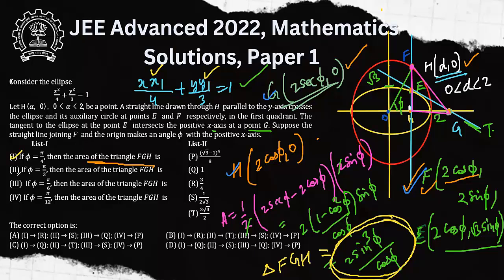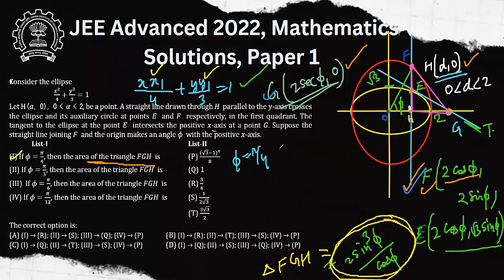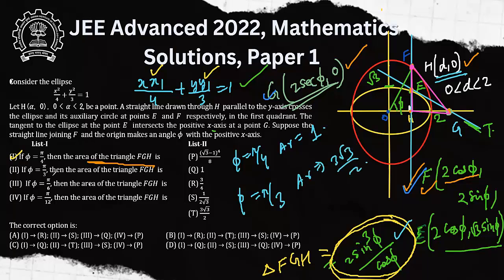For the different options, we plug in each value of φ. For φ = π/4, the area is 1, which matches (Q). For φ = π/3, the area is 3√3/2, matching (T). For φ = π/6, the area is 1/(2√3), matching (S). These results — (I)→Q, (II)→T, (III)→S — appear only in option C, which is the correct answer.